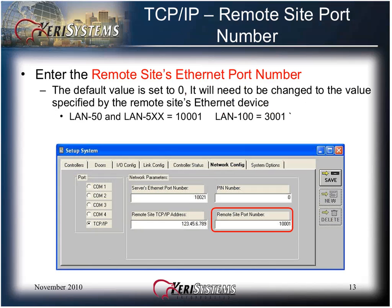Enter the remote site's Ethernet port number. The default value is set to zero and will need to be changed to the value specified by the remote site's Ethernet device. If you are using the LAN 50 or LAN 500 series device, change the port number to 1001. If using a LAN 100 device, use port 3001. However, the LAN 100 is an obsolete product and no longer supported — it may be present in older systems. LAN communication is explained in more detail in its own training presentation.